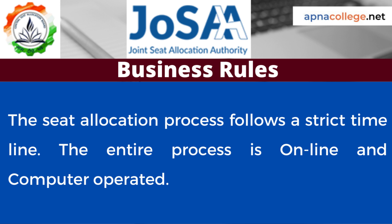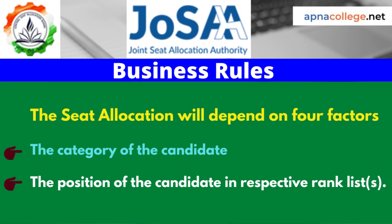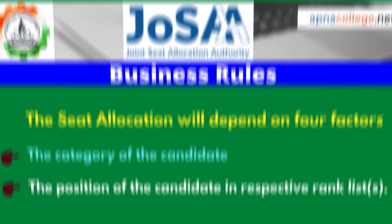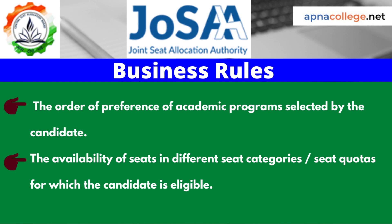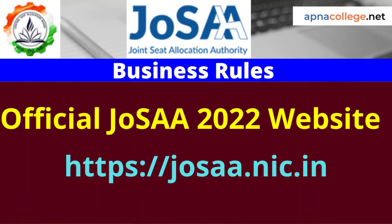Now we will look into the business rules for the seat allocation process for JOSA Counseling 2022. The seat allocation process follows a strict timeline and is entirely online and computer operated. No exceptions are possible, so candidates are strongly advised to thoroughly acquaint themselves with these business rules. The seat allocation will depend on four factors: Factor 1 - the category of the candidate; Factor 2 - the position of the candidate in the respective rank list; Factor 3 - the order of preference of academic programs selected by the candidate; and Factor 4 - the availability of seats in different seat categories or seat quotas for which the candidate is eligible.